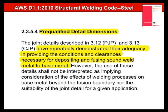We can also read these words in the code: the pre-qualified joint details have repeatedly demonstrated their adequacy in providing the conditions and clearances necessary for depositing and fusing sound weld metal to base metal. However, the use of these details shall not be interpreted as implying consideration of the effects of welding processes on base metal beyond the fusion boundary, nor the suitability of the joint detail for a given application.